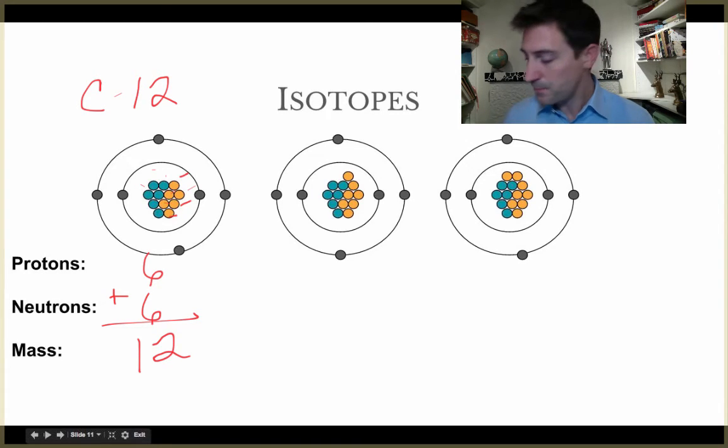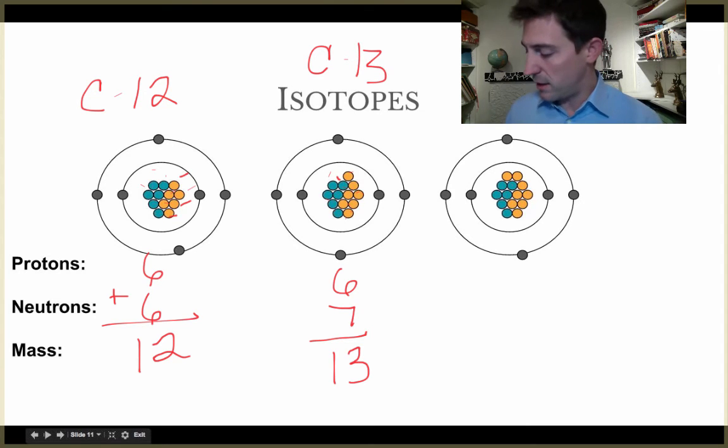We count up the next one over here, it's got one two three four five six protons in it, and it's got one two three four five six, it's got seven neutrons in there. So this is 13, I'm going to write carbon 13 here. Then I'm going to go to the next one, the isotope of carbon that we're really going to focus in on in the next couple of lectures.